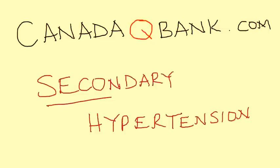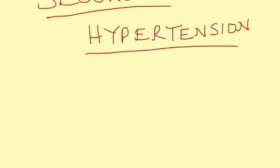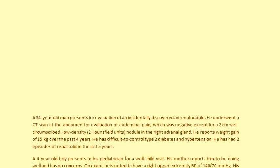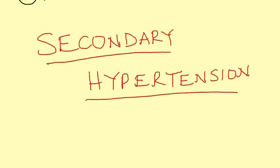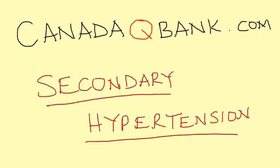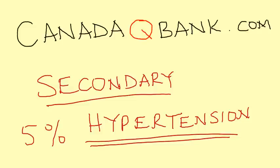Secondary hypertension is the topic for this video. Secondary hypertension accounts for 5% of all the cases of hypertension or high blood pressure, and 95% of the cases of high blood pressure are essential, but 5% have a secondary cause.